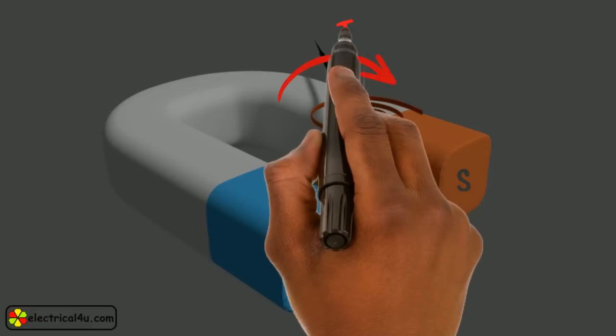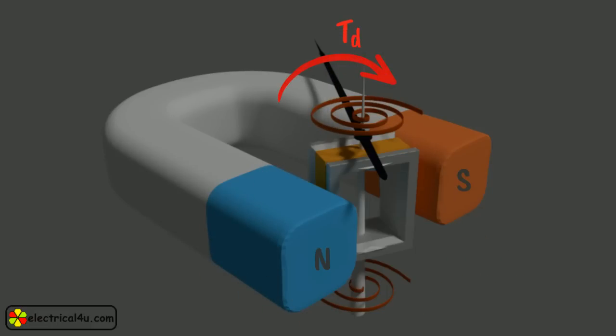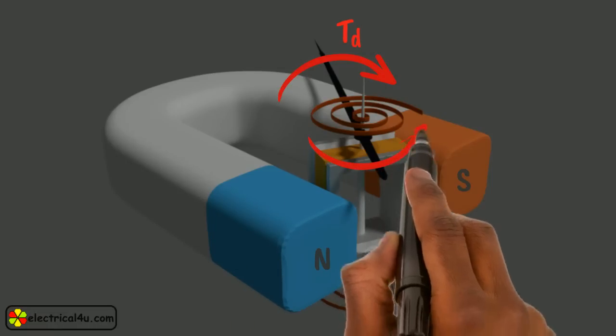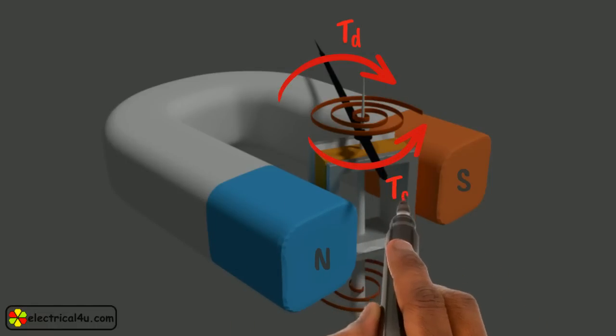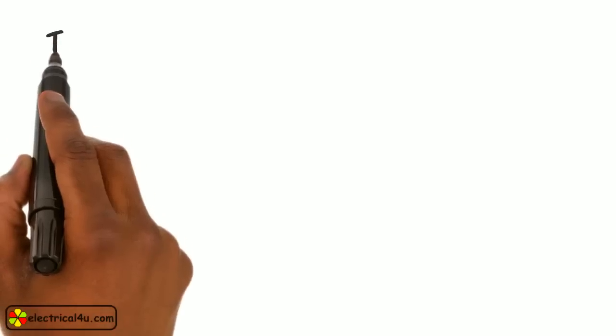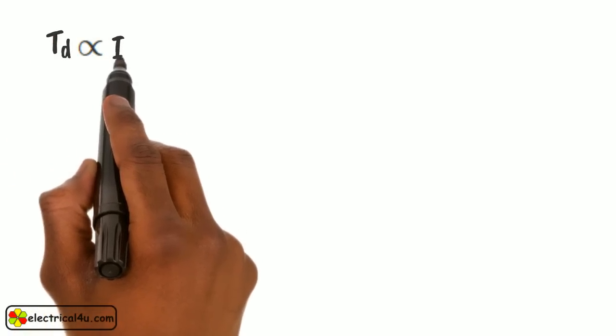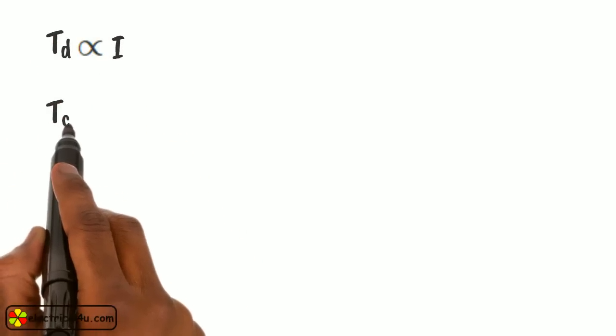As soon as there is a current in the coil, a deflecting torque TD is produced due to electromagnetic effect. The controlling torque TC is provided by two phosphor bronze conductive springs. The deflecting torque TD is directly proportional to current I through the coil.